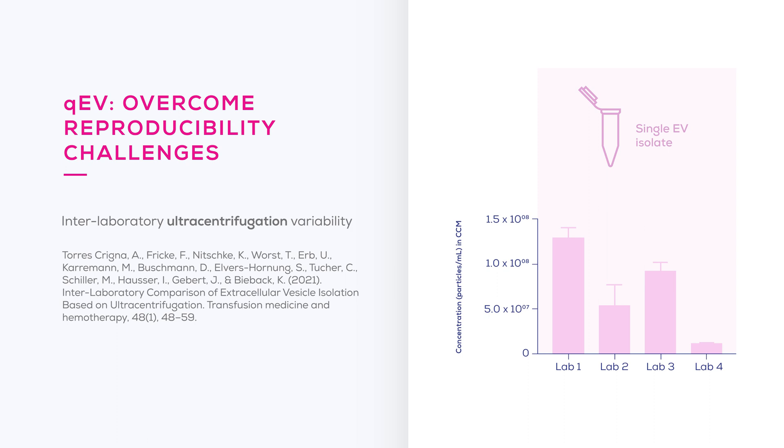With ultracentrifugation, quantitative differences in EV yield are thought to be both due to equipment and operator dependent technical variability. Meanwhile density based isolation methods rely on ultracentrifugation itself and therefore share the same sources of variation. In the study referenced here, four different labs took the same EV isolate and isolated EVs using ultracentrifugation, and as you can see the number of particles isolated in each of the labs varied substantially. Meanwhile, going the DIY route of column creation introduces unnecessary potential for error, with efficient and standardized column production requiring a high degree of optimization, time, resources and skill.